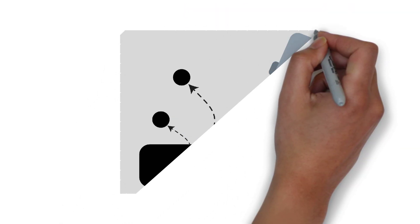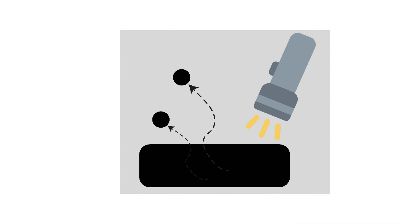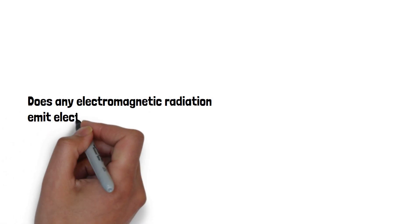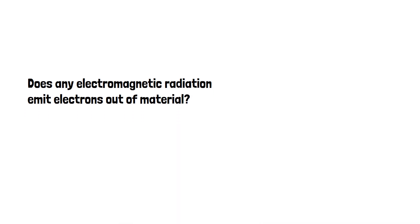Now, what is the photoelectric effect? It is the emission of electrons when electromagnetic radiation, such as light, hits a material. Now a question arises, does any electromagnetic radiation emit electrons out of material? Actually, no.